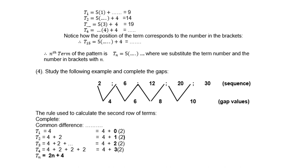Let's look at number 4. Study the following example and complete the gap. The sequence is 2, 6, 12, 20, 30. The first differences are: 6−2=4, 12−6=6, 20−12=8, 30−20=10 — so the differences increase by 2 each time. Using the pattern: term 1 is 4 + 0×2; term 2 is 4 + 1×2; term 3 is 4 + 2×2; term 4 is 4 + 3×2. Therefore the rule is tn = 2n + 4.